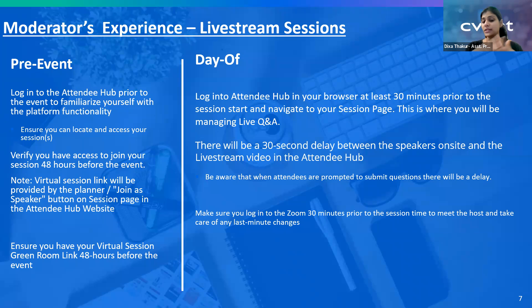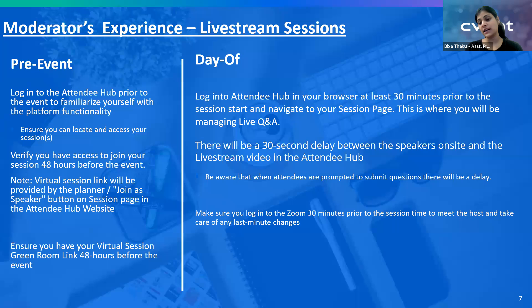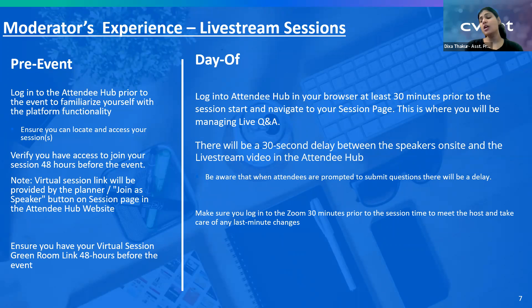Make sure you log into the Attendee Hub 30 minutes before start time, navigate your session, locate the session you have to moderate, and see if you're able to access everything smoothly. Similarly, on the day of the event, we'd request you log into the Zoom room as well 30 minutes prior to your session start time, because some of you are working as hosts and some as moderators, so you can meet each other.